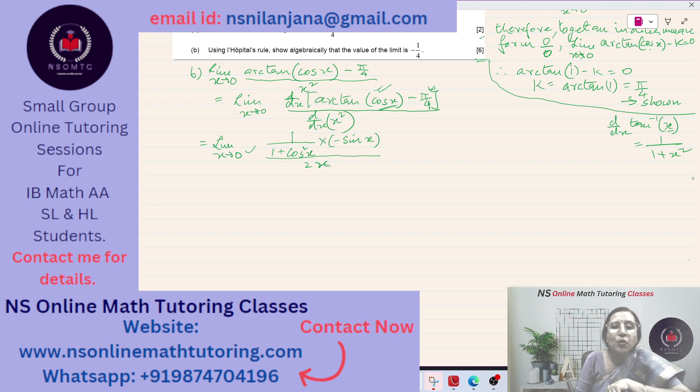And when x tends to 0, this is minus sine x over 1 plus cos square x. What happens to sine x? It is 0. So the numerator is 0 and the denominator, it is having x, so this is also 0. So this is 0 over 0 case again. Now again I have to use the L'Hôpital's rule.